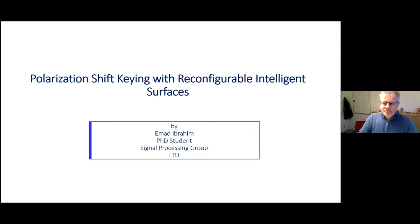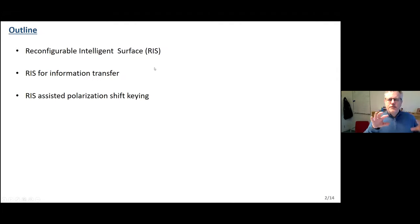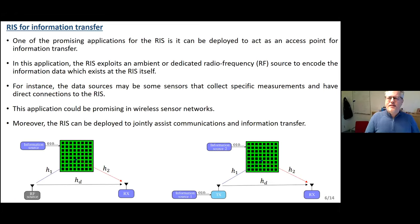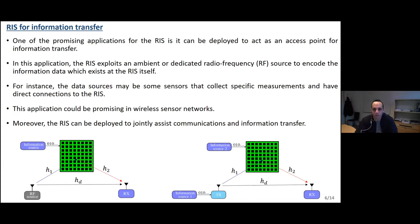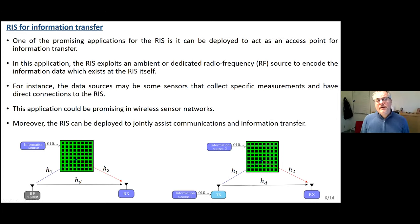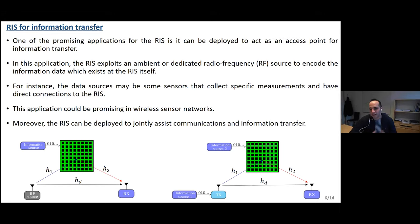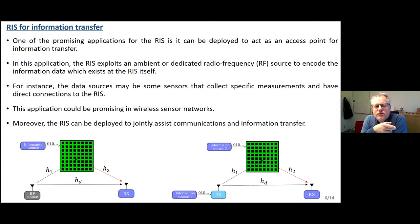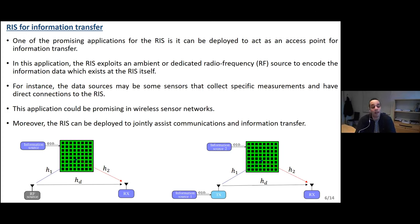In the Q&A, a questioner notes that in this scheme the transmitter is decoupled from the power source — using an external power source — making the information transmitter very energy efficient, especially when using an ambient RF source already present in the environment. The speaker agrees, adding that energy efficiency is further enhanced because there is no RF chain or power amplifier; the RIS only leverages reflection. The questioner also notes that a single RF source could serve several transmitters, which the speaker confirms.